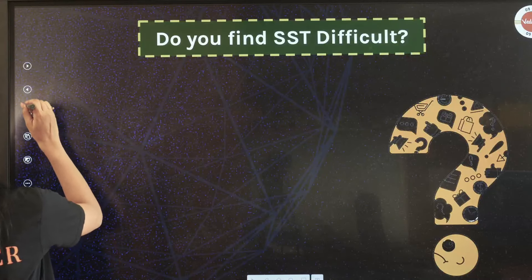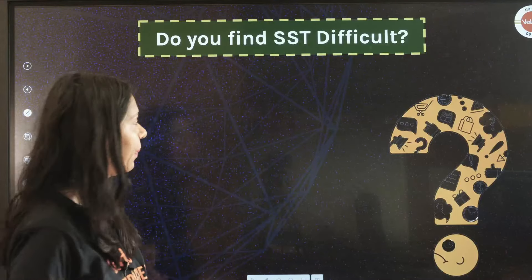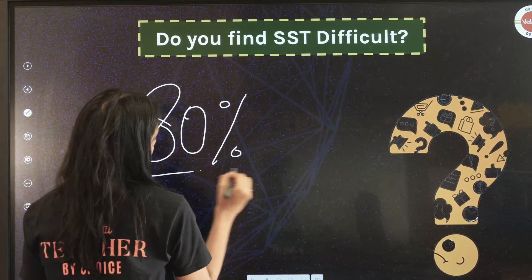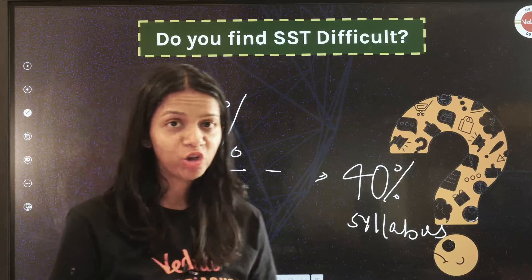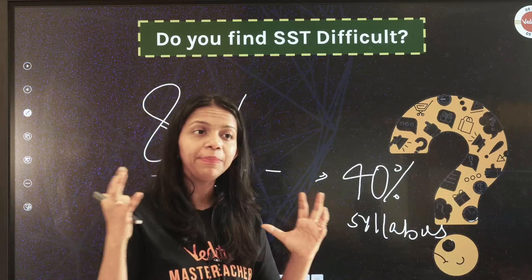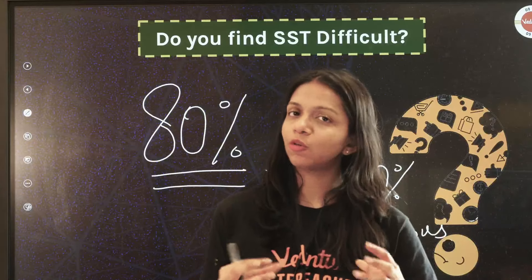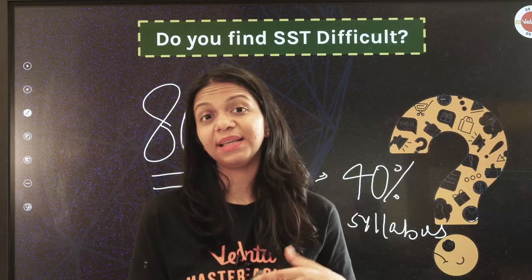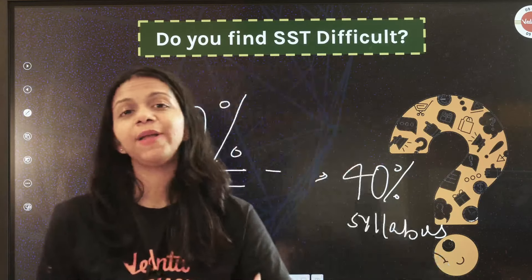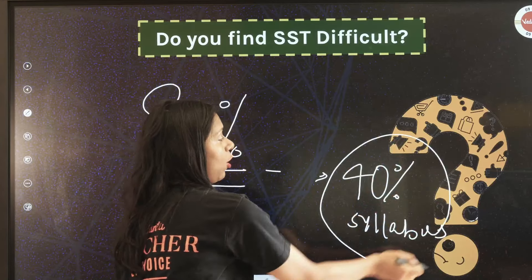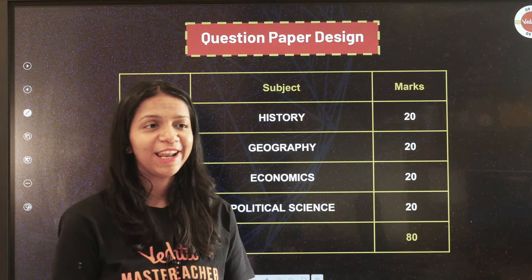Now let us talk about exactly which important topics and chapters you need for SST. Sabse pehli cheez yaad karo ki 80% of the paper comes from 40% of the syllabus. Even if SST has many chapters, you don't need to memorize everything equally — some chapters fetch more marks, and within those, certain topics repeat year after year. We can predict these because topics that have repeated for 10 years will likely repeat again. So that 40% of the repeatedly-tested syllabus, you must do thoroughly — by hook or by crook.